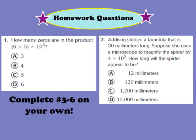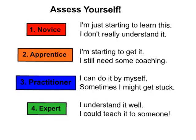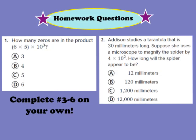Now let's take a look at our homework questions for tonight. Please complete questions 1 and 2, as well as numbers 3 through 6, found on page 12 in your GoMath workbook. Don't forget, somewhere on your homework page you need to assess yourself and write your number down: number 1 is a novice, number 2 is an apprentice, number 3 is a practitioner, or number 4 is an expert. I hope you guys have a great evening, and I look forward to seeing you in class tomorrow.